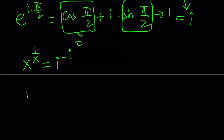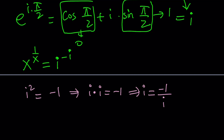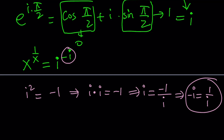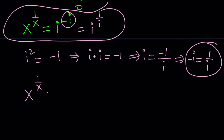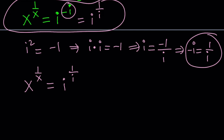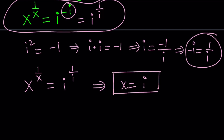Here's the trick: i squared equals negative 1, so i times i equals negative 1. Dividing by i, we get i equals negative 1 over i, and therefore negative i equals 1 over i. In other words, 1 over i is the same as negative i. So I can replace negative i with 1 over i, and this becomes i to the power 1 over i. Now I have x to the power 1 over x equals i to the power 1 over i. From here I can conclude that x equals i is a solution, because if x is i, then this works. Is that the only solution? Something to think about — please comment.